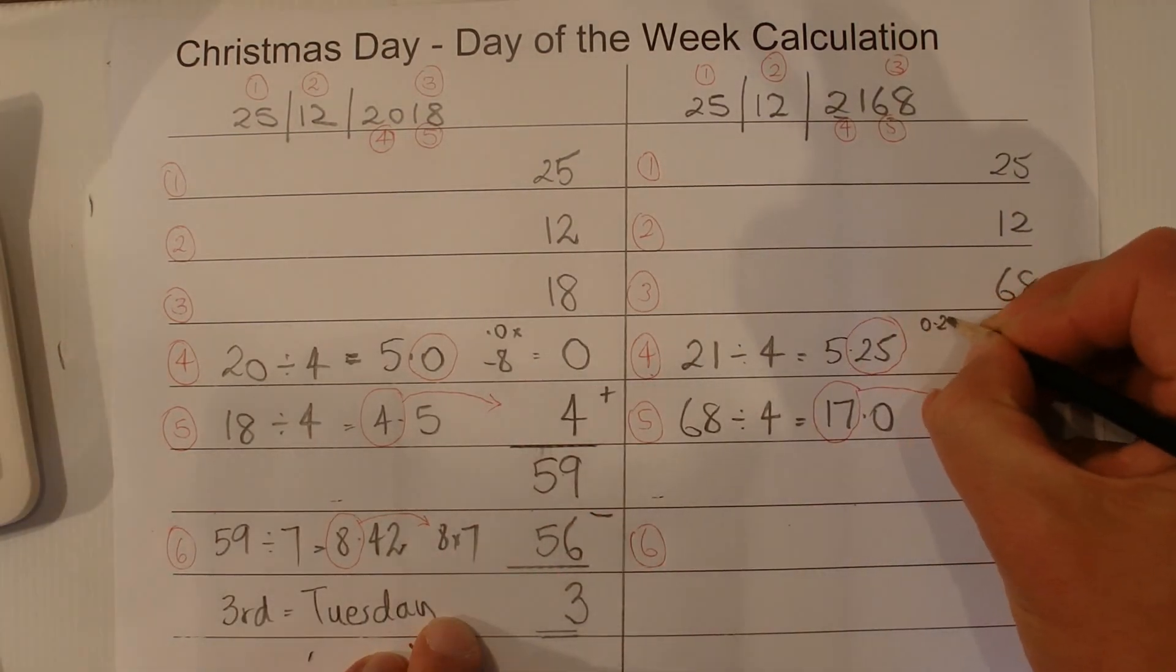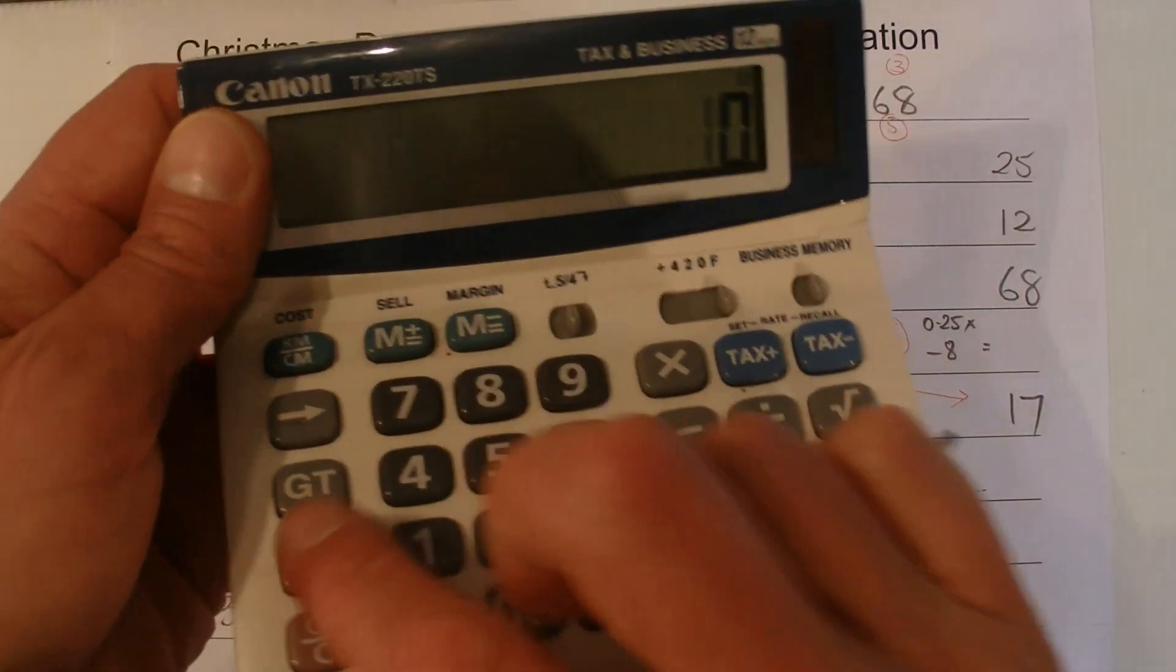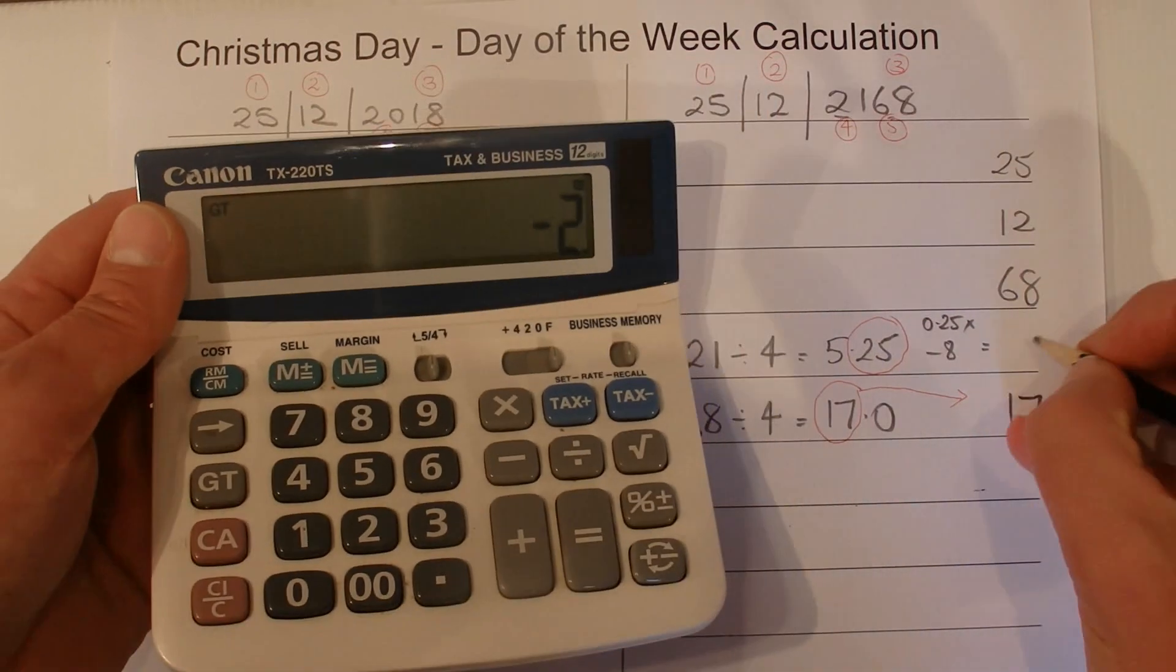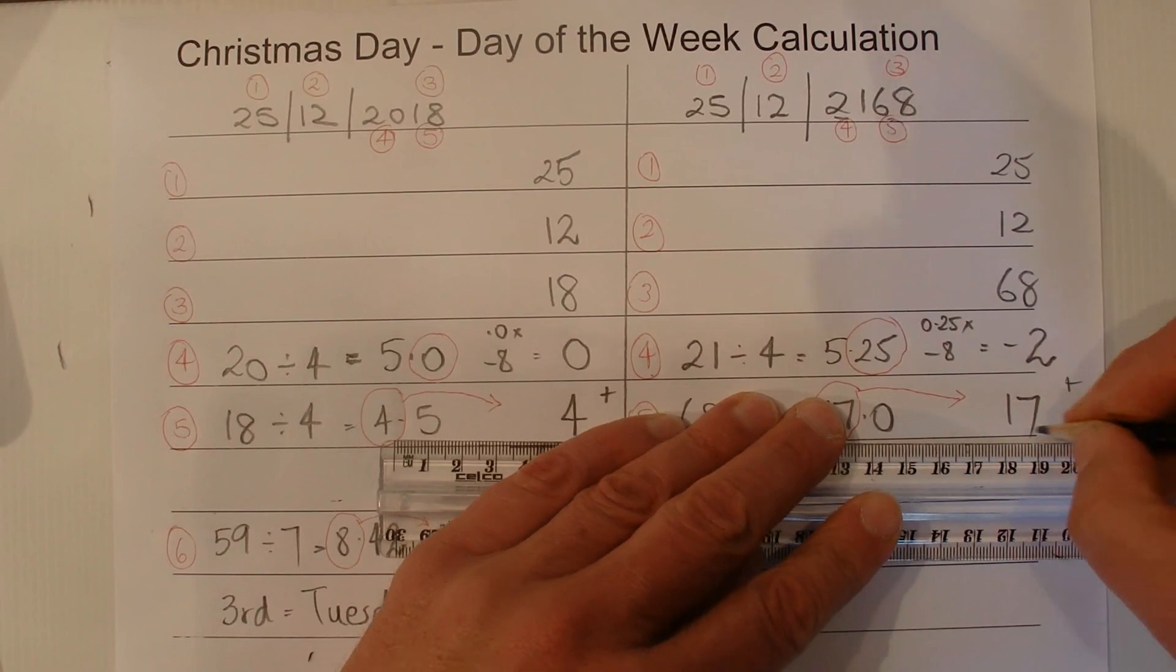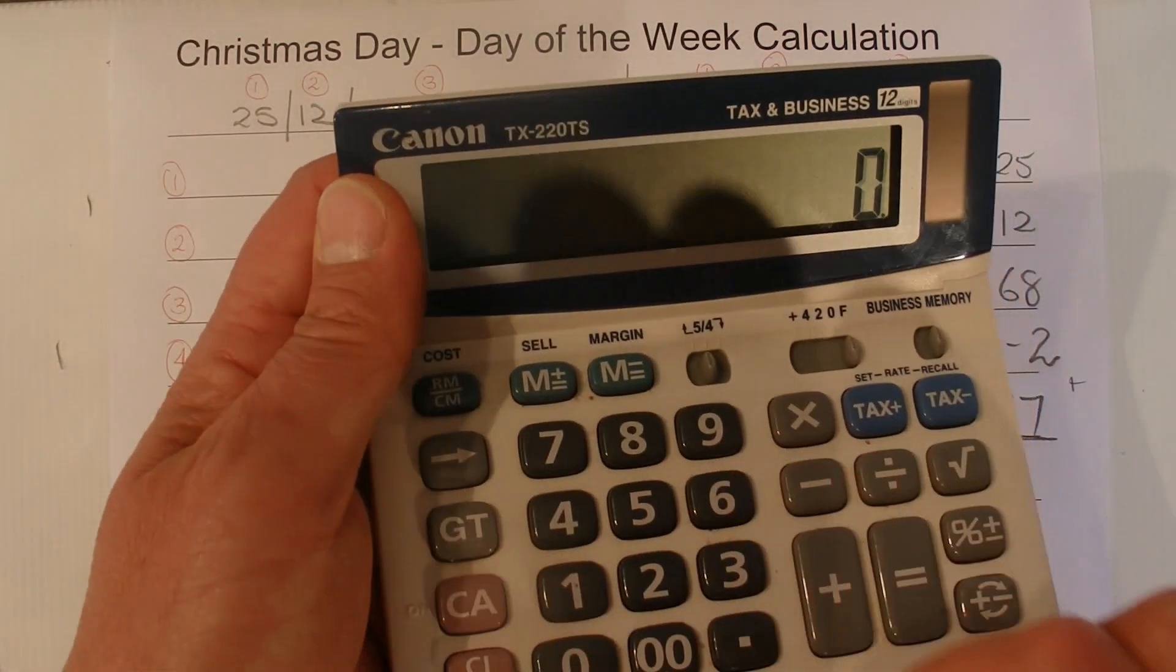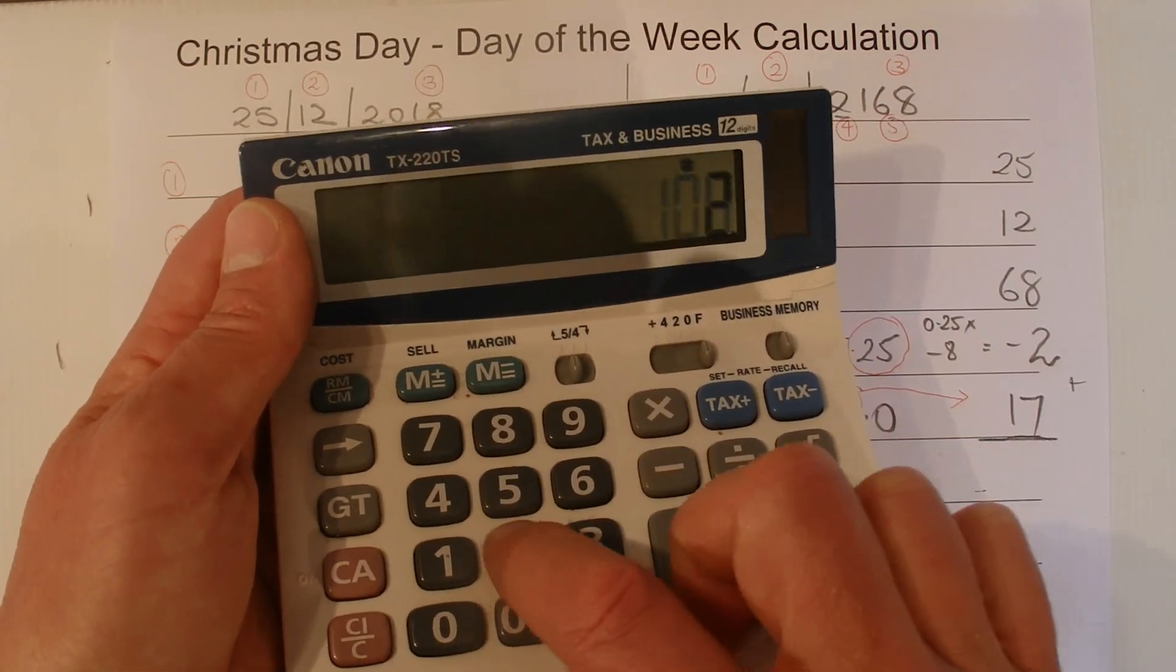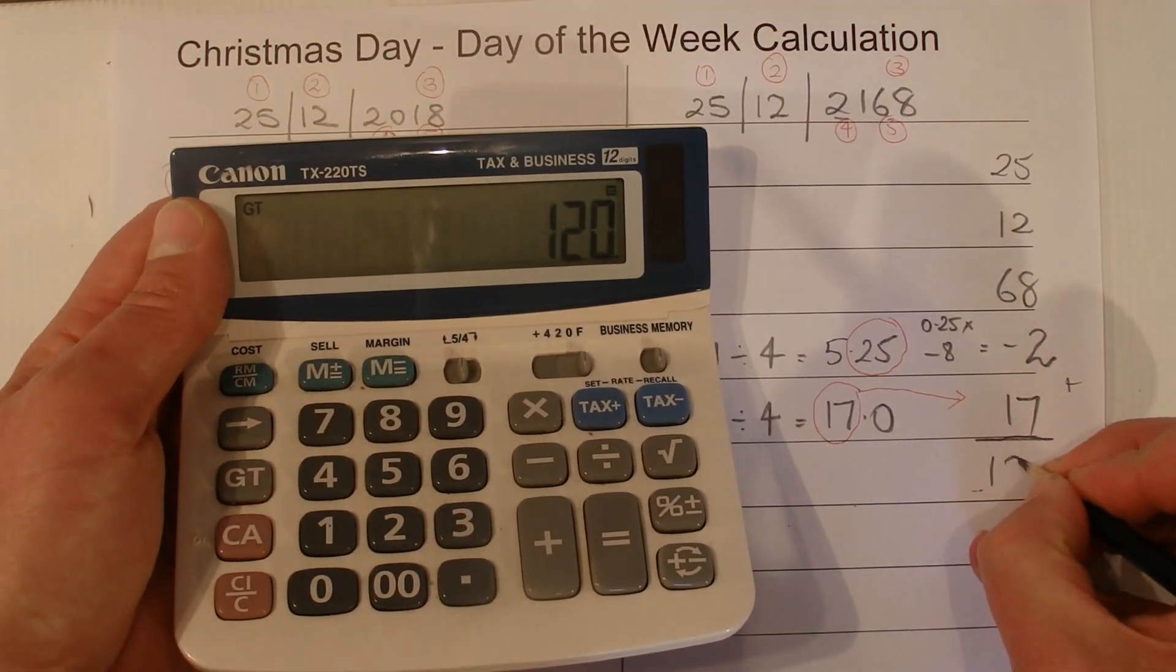So we'll transfer the 17 across to the calculation. And the 0.25, we need to multiply that by minus 8. So do that on the calculator. So 0.25 times 8 minus equals minus 2. Now minus 2. And then with those 5 numbers, we'll add them up. And what have we got? 25 plus 12 plus 68 minus 2, and plus 17. And the total of those 5 numbers is 120.